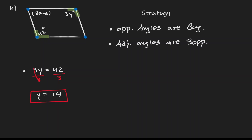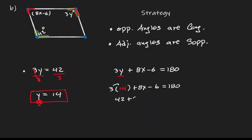If adjacent angles need to be supplementary, we can see that the angle with expression 8x minus 6 is adjacent to the angle with expression 3y. Adding them must equal 180 degrees. So we write: 3y plus 8x minus 6 equals 180 degrees. Since we already know y equals 14, we substitute: 3 times 14 plus 8x minus 6 equals 180 degrees, giving us 42 plus 8x minus 6 equals 180 degrees.